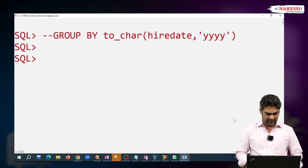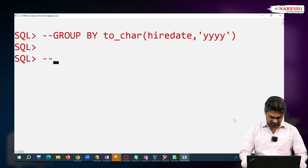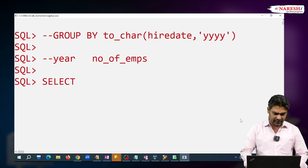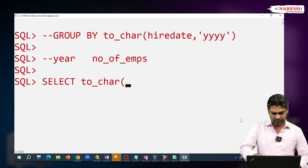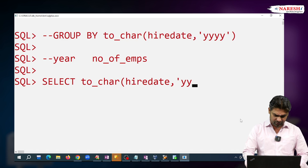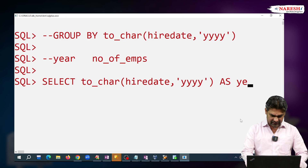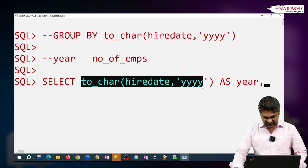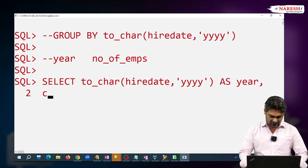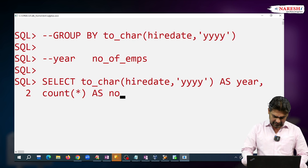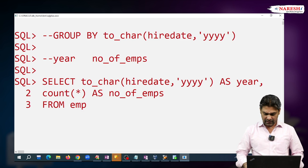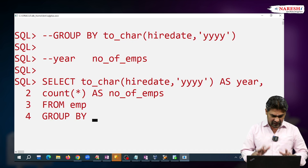Now let me write the query. Select: in the first column, year; in the second column, number of employees. To get the year, I am using the TO_CHAR function — TO_CHAR(hire_date, 'YYYY') — giving it the alias name 'year'. Then COUNT(*) as number_of_employees. From the EMP table. Group the records by year.